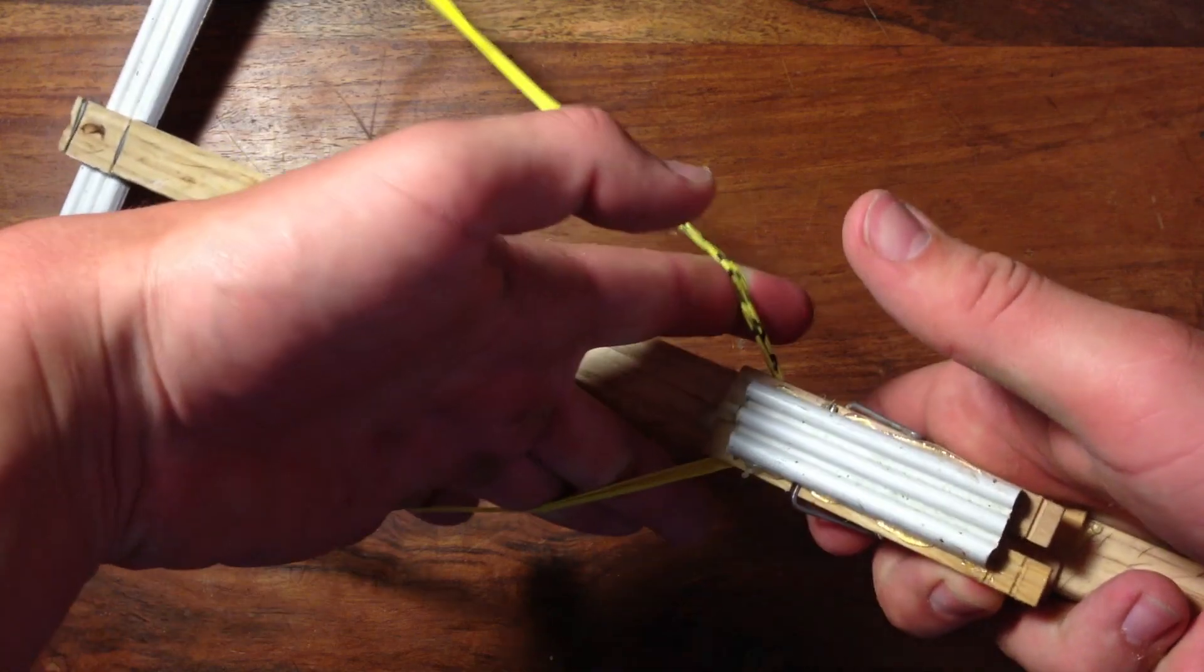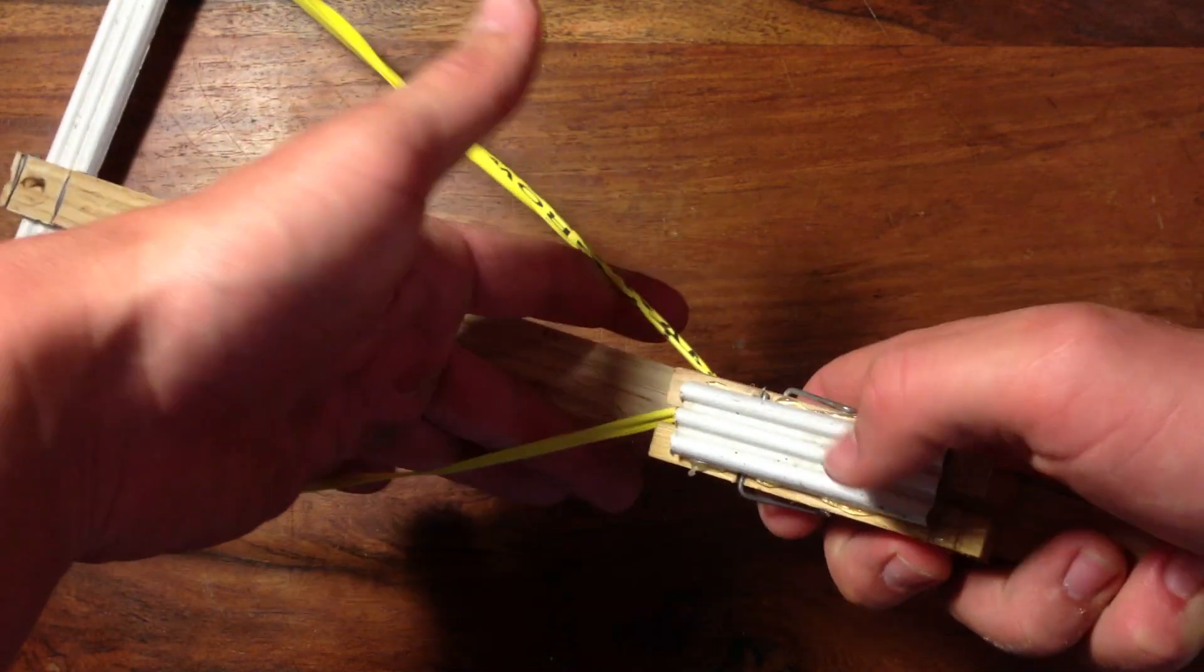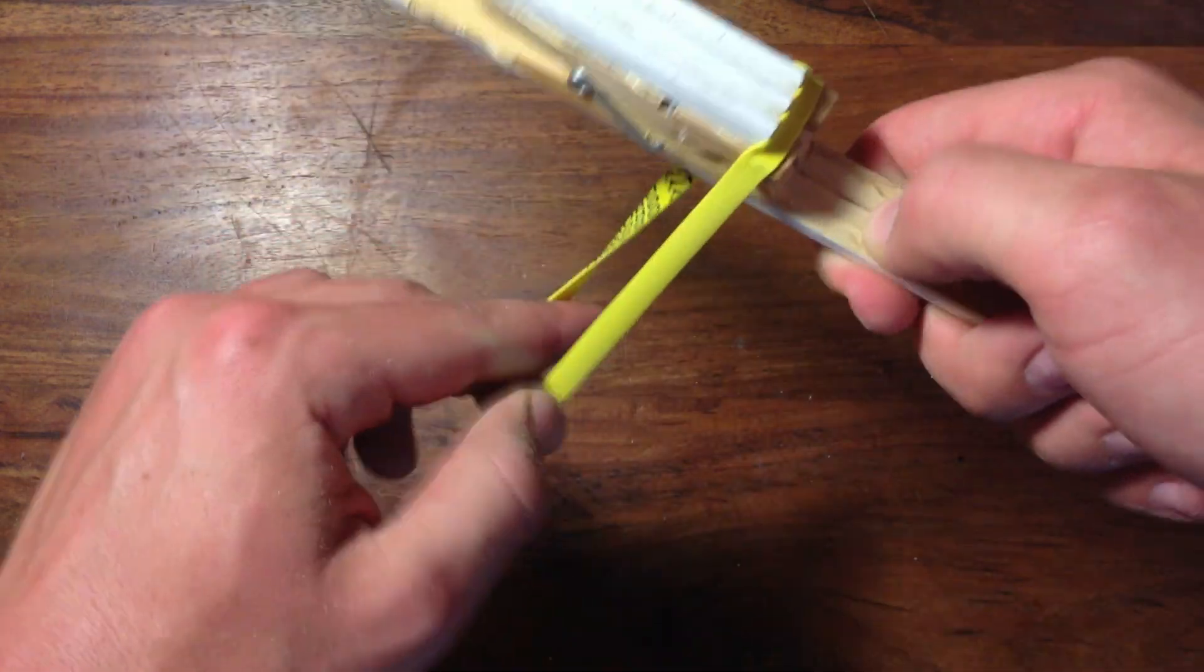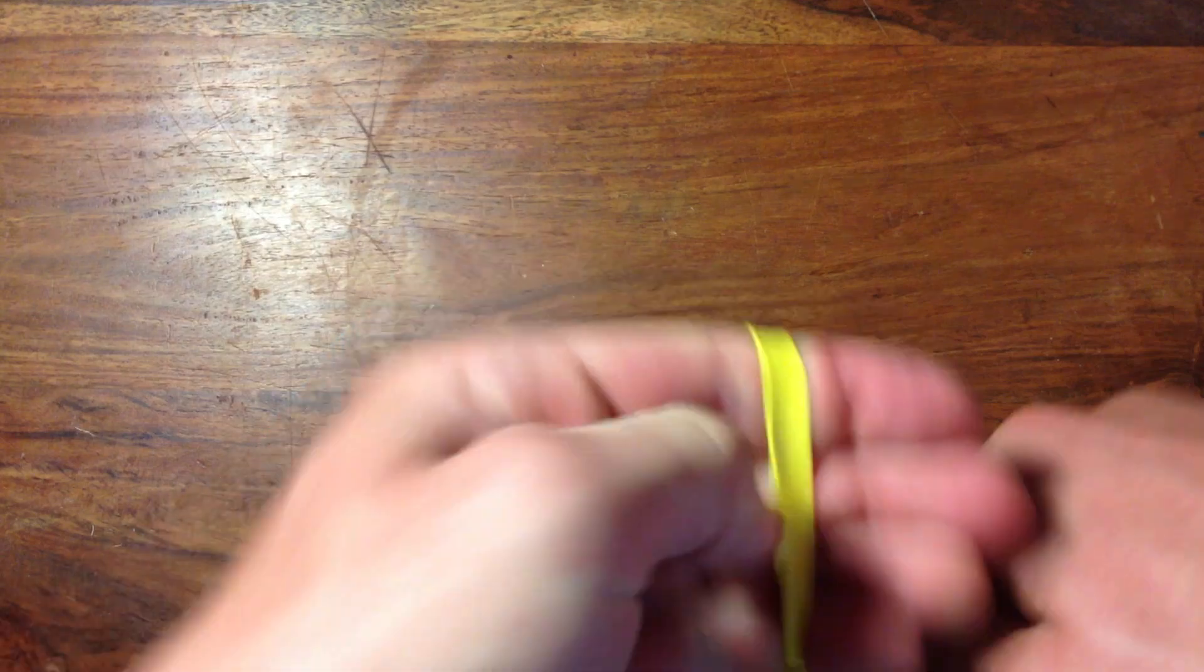Now if we try to load it, the clothespins are not strong enough to hold the rubber bands in place. To fix this, grab another rubber band and wrap it around the ends of the clothespins a few times. This adds strength and the crossbow will stay loaded.